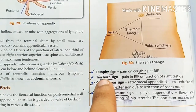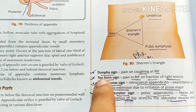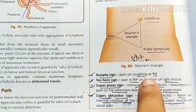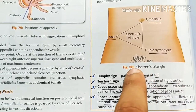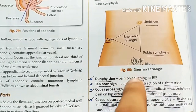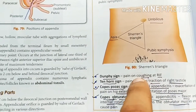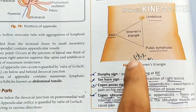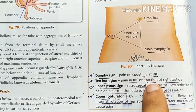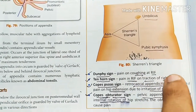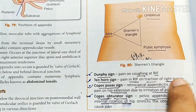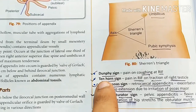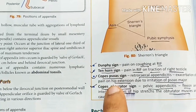Next is Tenhorn sign. This is the traction of the right testicle. When you apply traction to the testicle, you get Tenhorn sign. Remember: T for traction, T for right testicles, and T for Tenhorn sign.